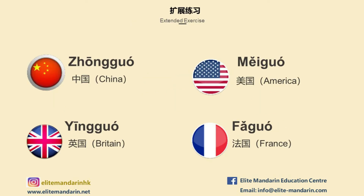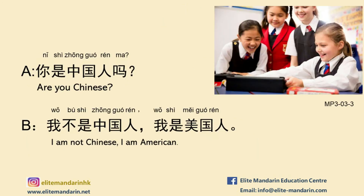Let's learn more countries for this part. 中国, which means China. 美国, which means America. 英国, which means Britain. 法国, which means France.